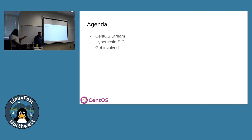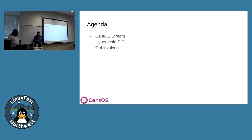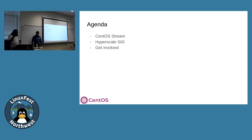We're going to go over a fairly quick and hopefully understandable overview of how CentOS came to be, where it fits into the picture, what the various components are in the pipeline, where they come from, and where the operating system comes from. Then we'll talk more specifically about the work we've been doing as part of the CentOS Hyperscale SIG, and we'll close with a few words on how you can get involved.